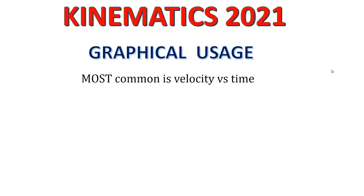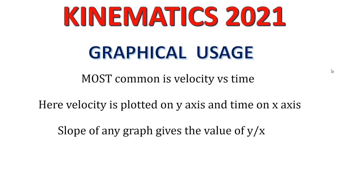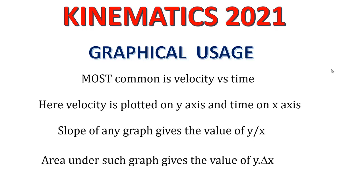The most common graph is velocity versus time, where velocity is plotted on the y-axis and time on the x-axis. The slope of any graph is y divided by x. If the line has a constant slope, we can read it directly; if the slope is varying, you must draw a tangent at that point and find y divided by x. The area under the graph is going to be y times delta x. Let me explain slope and area in slightly more detail.